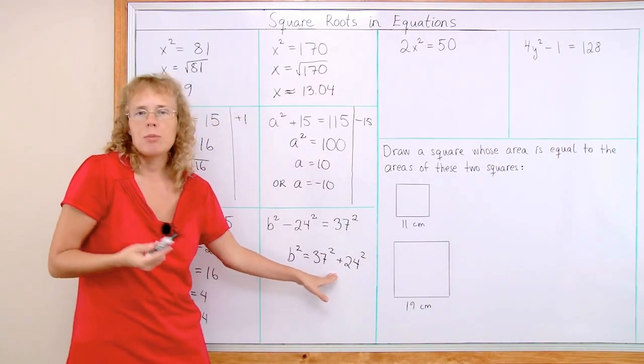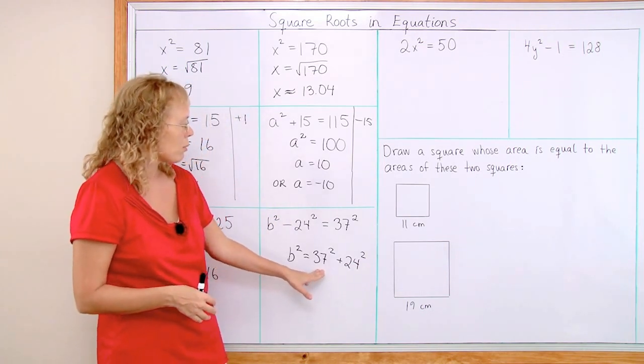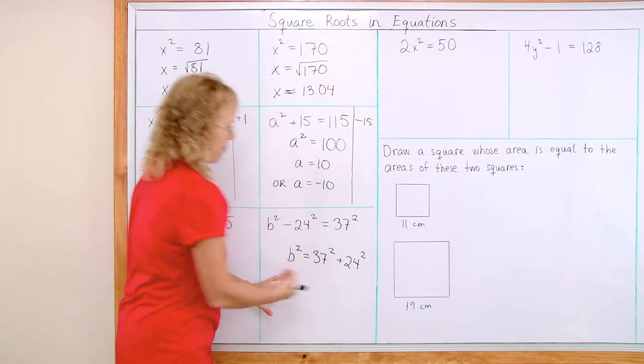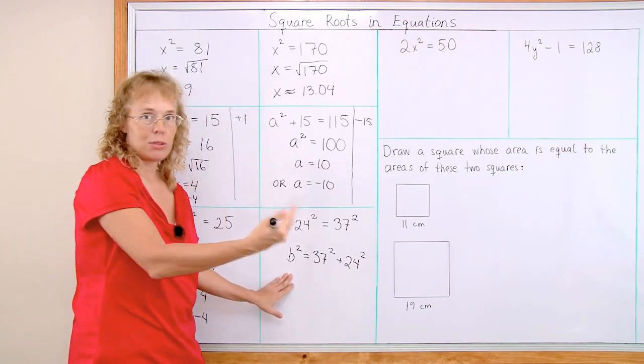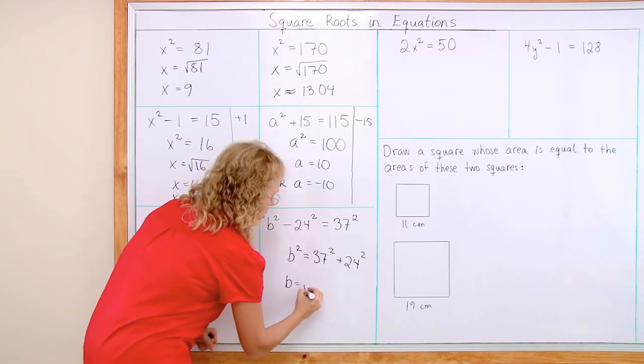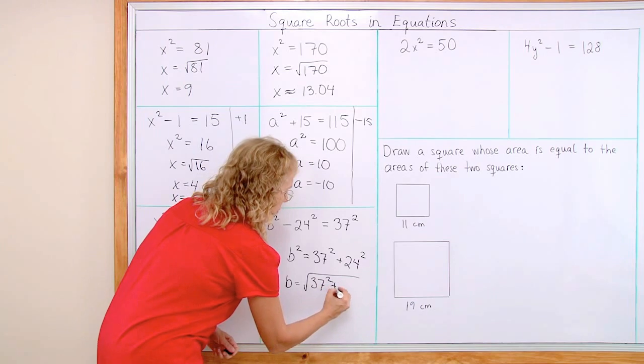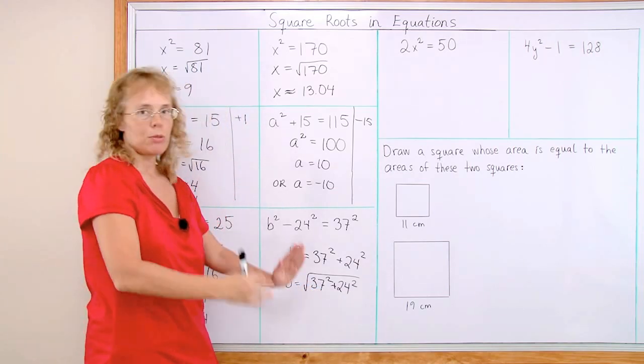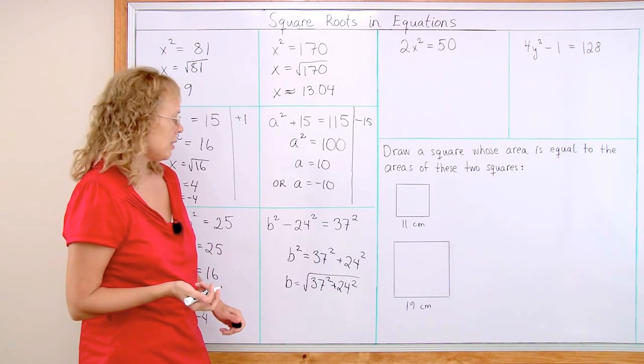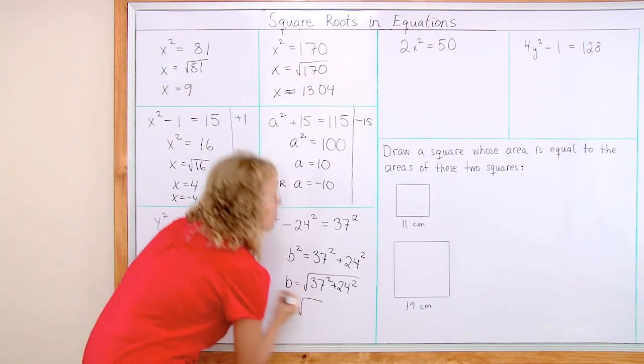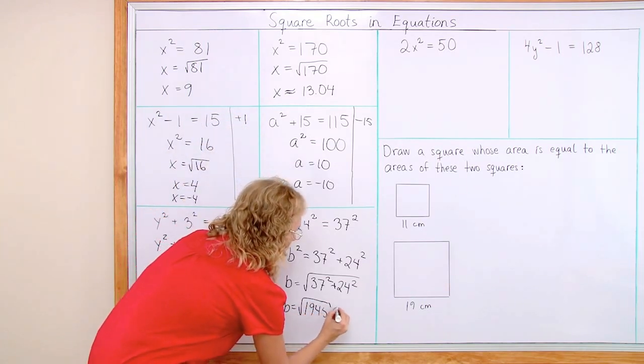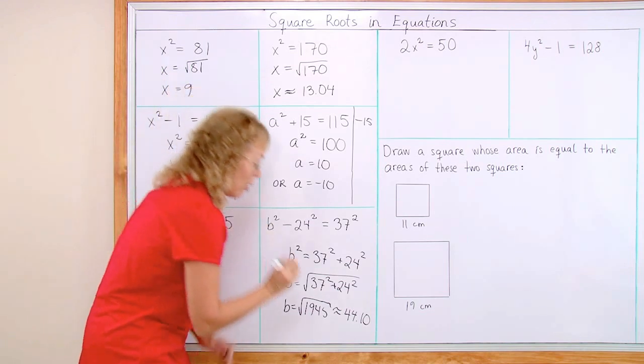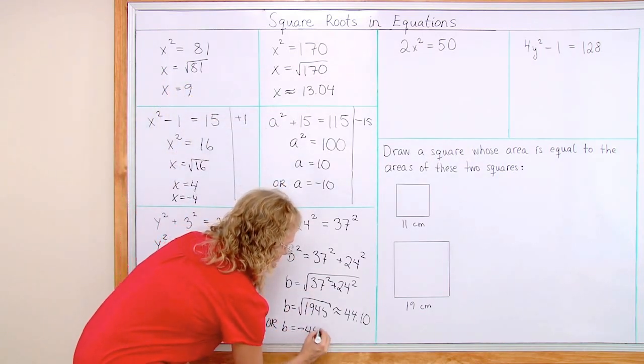The reason I am not simplifying these is because I am just going to put them into the calculator. I don't really need to know what this number is or what this number squared is, right? And now it is of the form b squared equals some number. And so now I take the square root. I can write it like this. b equals square root of this whole thing. And then you use your calculator. You first calculate what is under the square root. And then you take the square root of that number. And we will get b equals square root of 1945, which is approximately 44.10. Or b could be negative 44.10.